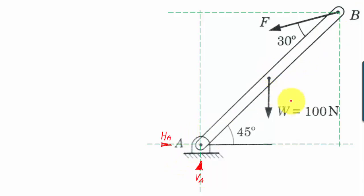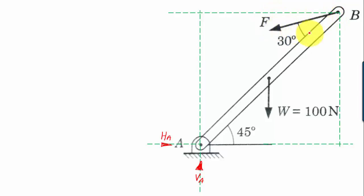The bar AB has a self-weight of 100 Newtons acting in the downward direction. The bar would have a tendency to fall down, and to prevent this, a force F is applied at an angle of 30 degrees with the length of the bar. The idea of this force is to counter the weight and prevent bar AB from falling.